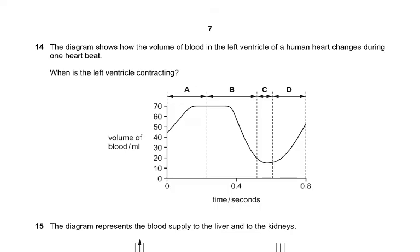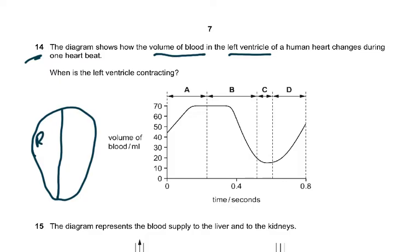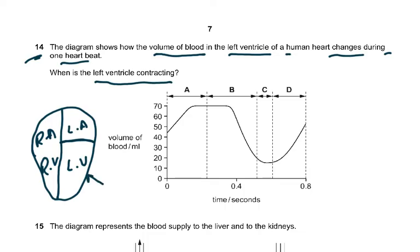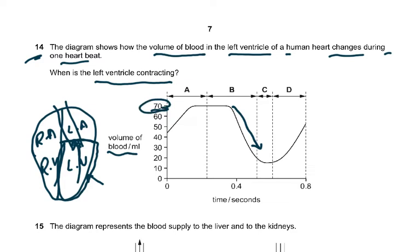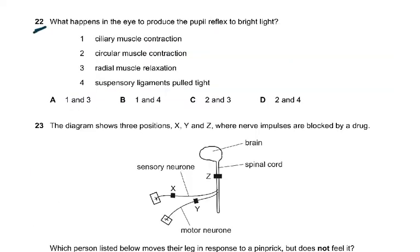Question 14: the diagram shows how the volume of blood in the left ventricle changes during one heartbeat. When the left ventricle contracts, the muscle in the wall contracts and blood flows into the aorta, so the volume decreases. The volume starts at 70 and then decreases — that is why the answer was B.